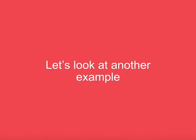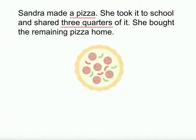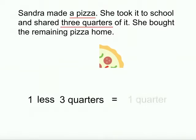Let's look at another example. Sandra made a pizza. She took it to school and shared three quarters of it. She brought the remaining pizza home. The key words are the whole pizza and sharing three quarters. Let's think of it as a diagram. Here's the whole pizza. We can represent this as the whole number one. If she shares three quarters, it means they are taken away. So we have less three quarters, which equals one quarter left over.